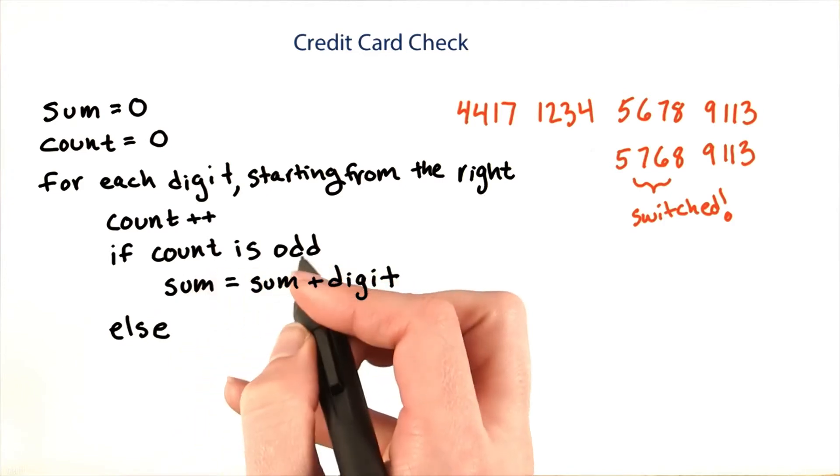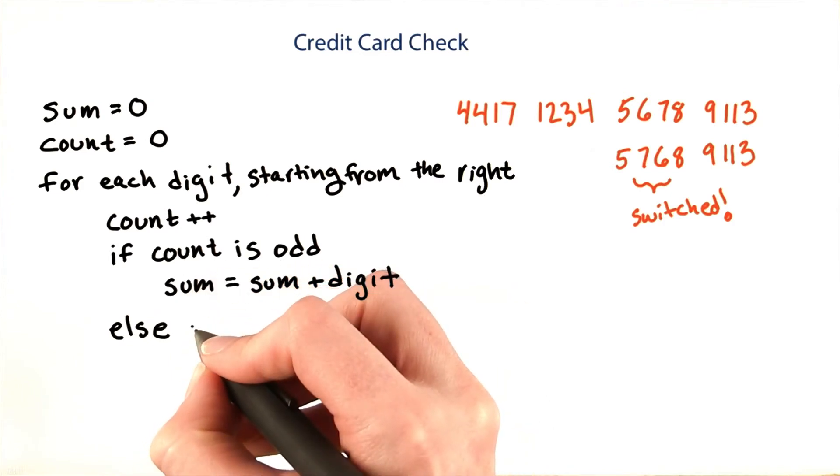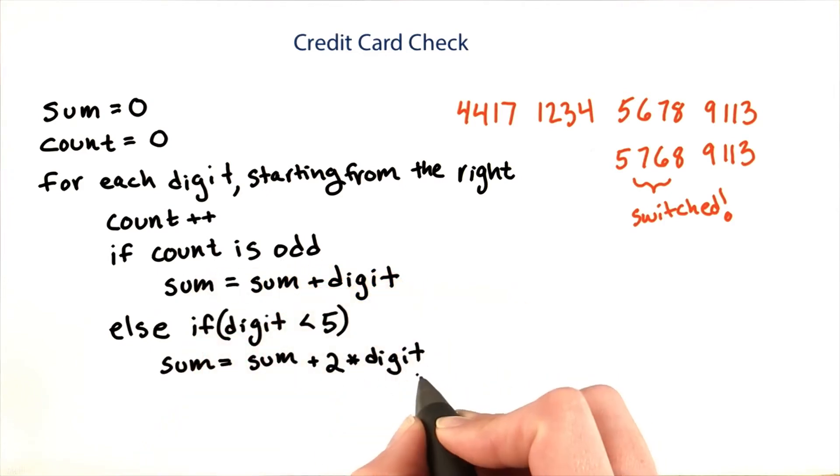Else, if the count is not odd, and the digit is less than 5, we add twice the digit to the sum.